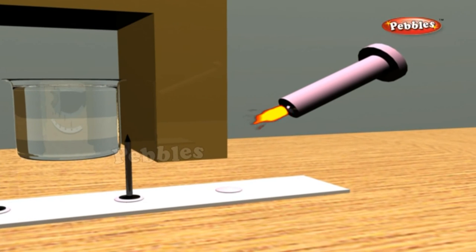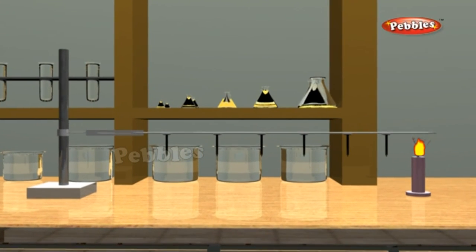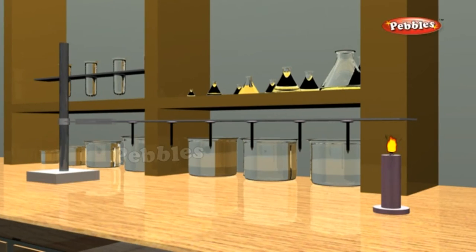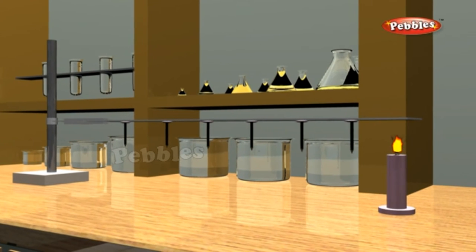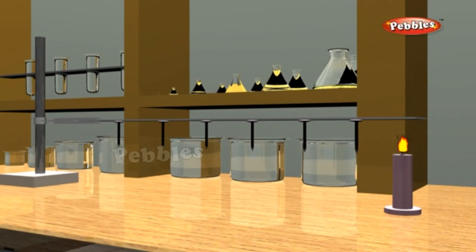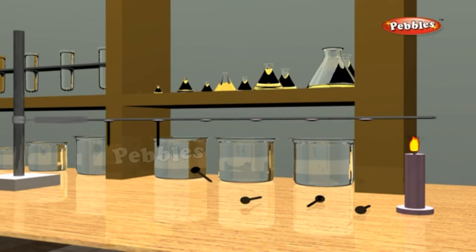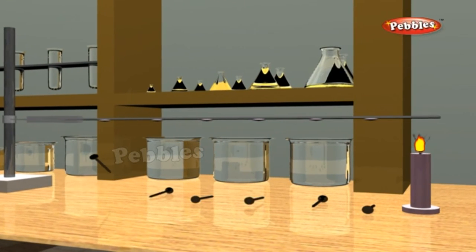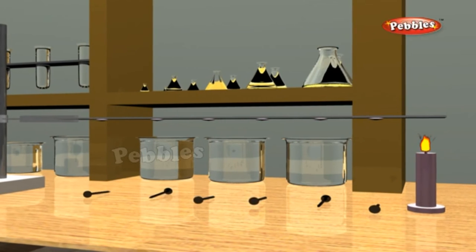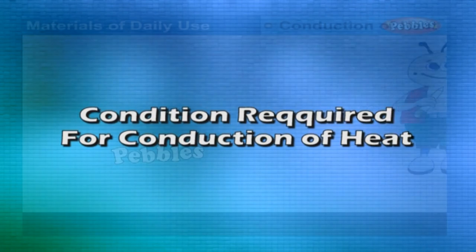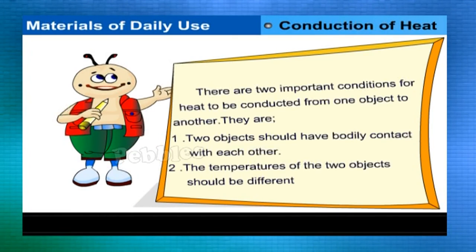Experiment on conduction: fix drawing pins with wax onto a metal rod at regular distances. Heat one end with a candle. The pins drop one by one starting from the hot end — pin one drops first, then pin two, and so on — because the wax melts as heat travels from the hot end to the cold end by conduction.